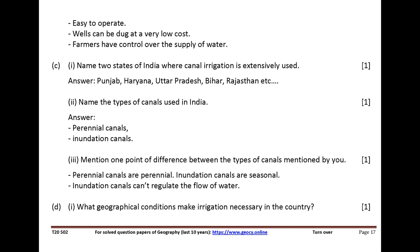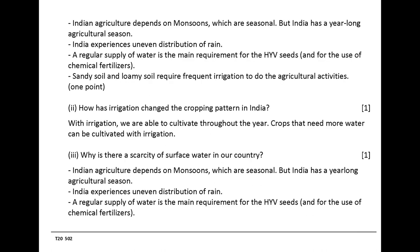Indian agriculture depends on monsoons, which are seasonal. But India has a year-long agricultural season. India experiences uneven distribution of rain. A regular supply of water is the main requirement for HYV seeds. Sandy soil and loamy soil require frequent irrigation to do agricultural activities.